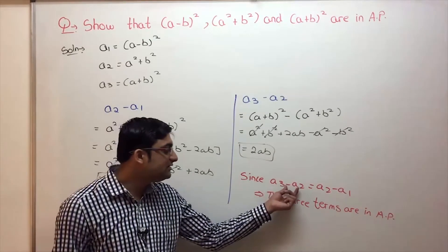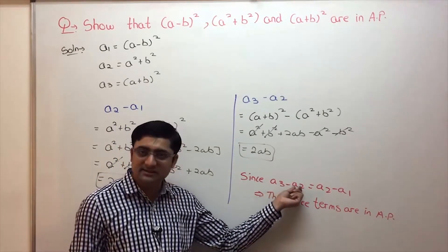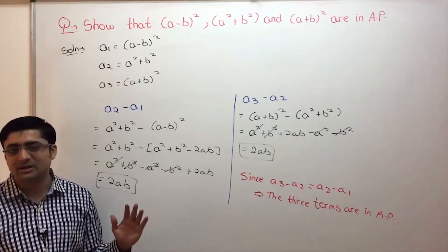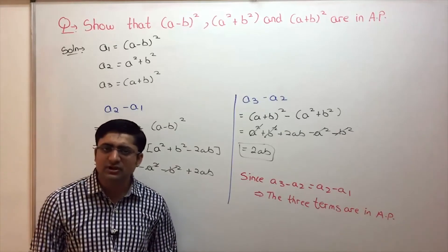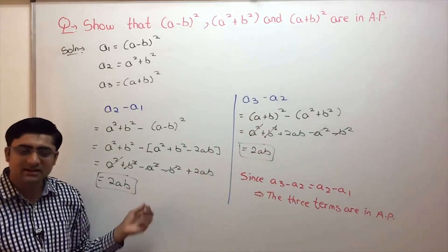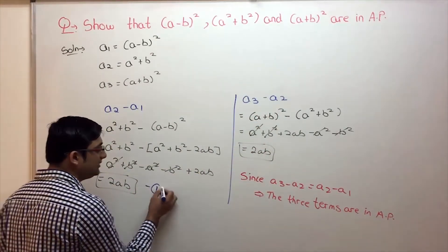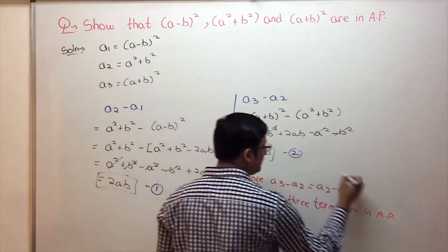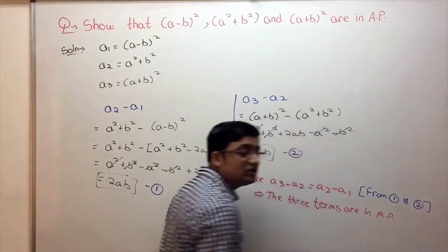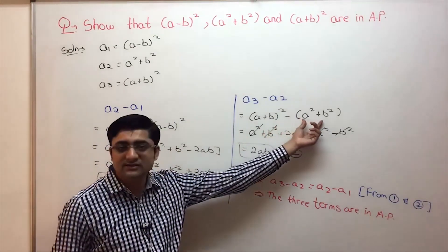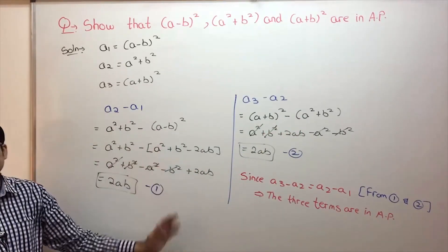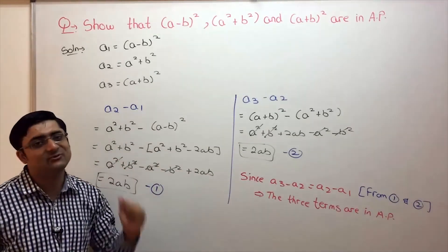Because the difference between consecutive terms is the same — third term minus second term equals second term minus first term — hence the three terms are in AP. Whenever you want to show three terms are in AP, just find the difference between the second and first term, and the third and second term. If the two differences are equal, they are in AP. You can label these as equation 1 and equation 2, and state 'from 1 and 2'. Just be very careful with the minus sign when subtracting the second term.